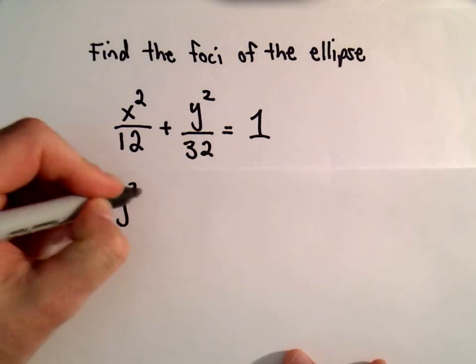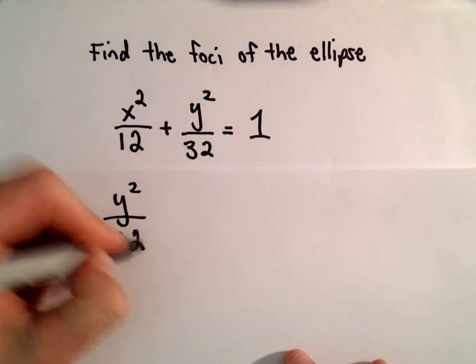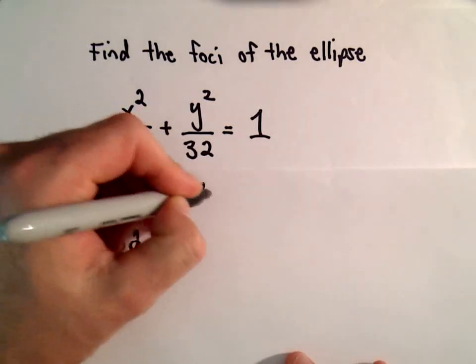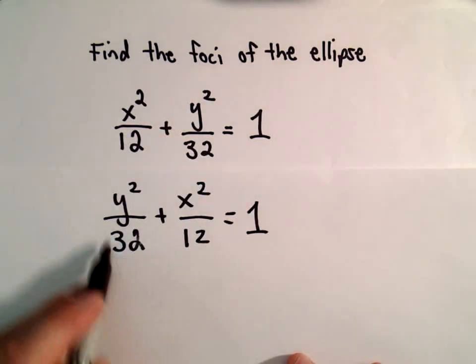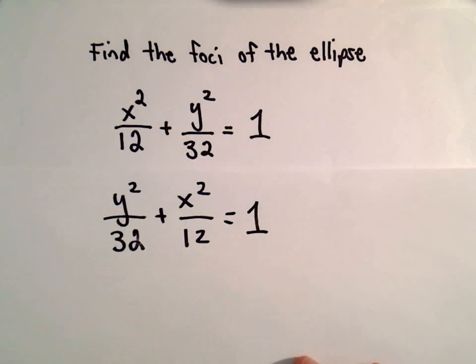I'm going to write it so that y²/32 is first. That's the more standard way of writing it. We tend to write whichever denominator is larger first. You don't have to.